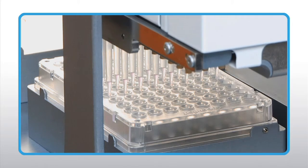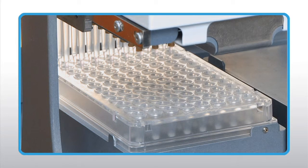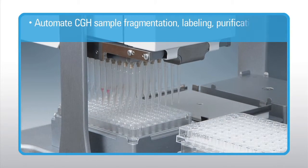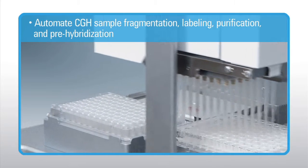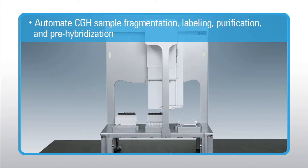After incubation, the samples are now ready to be hybridized to the Agilent microarrays. In this video, we have demonstrated an effective new method for automating the CGH sample fragmentation, labeling, purification, and pre-hybridization setup in a 96 well format with the Bravo automated liquid handling platform.